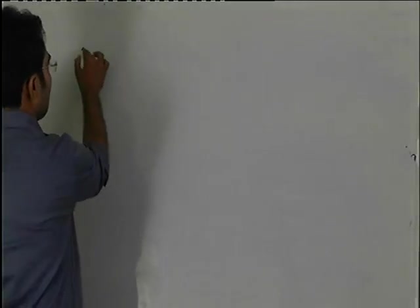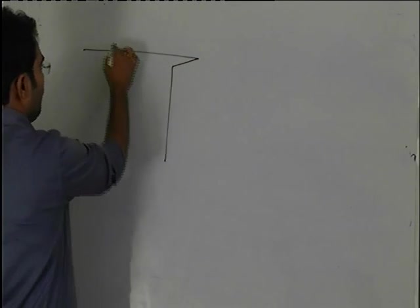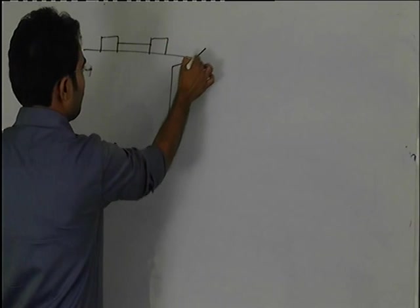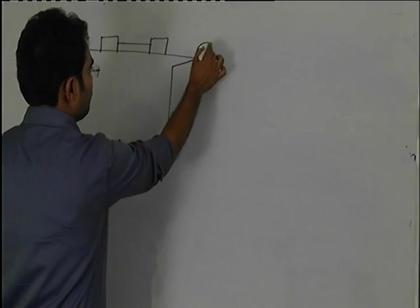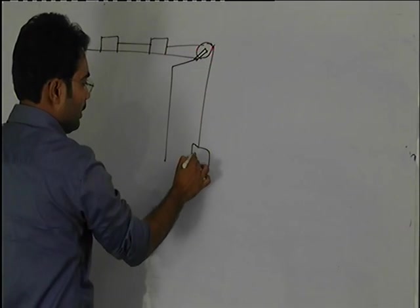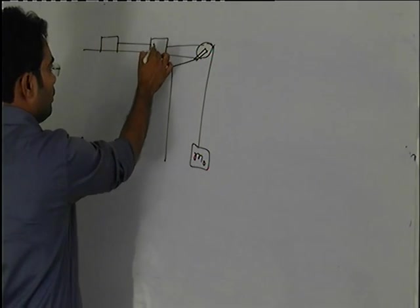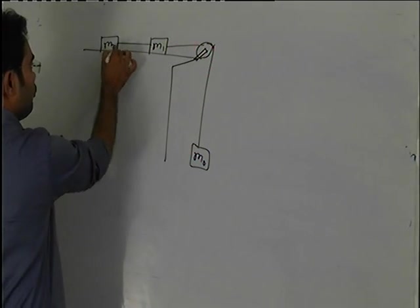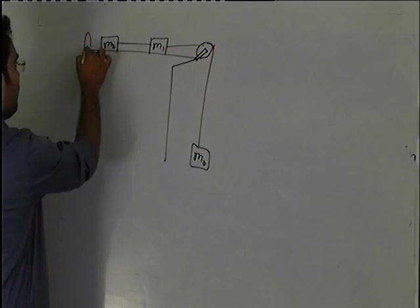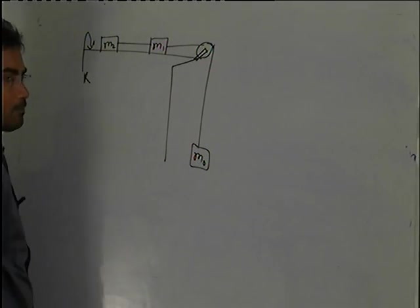In this problem, there is a rough table. This is M0 mass, this is M1 mass, this is M2 mass. This table has friction coefficient K.